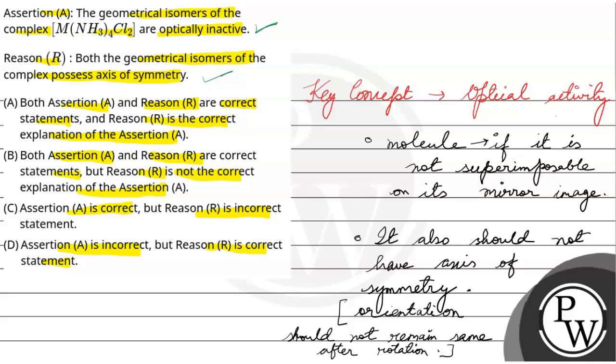So, assertion and reasons are true. Assertion and reason both are true. And reason is also assertion's best explanation, is the correct explanation. So, our option will be A. This one. So, our final answer is A.